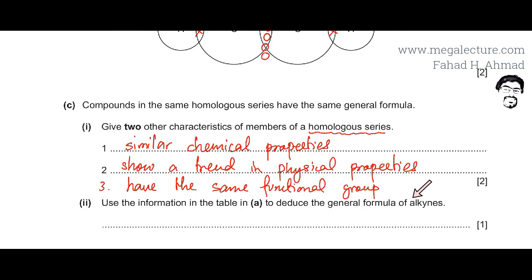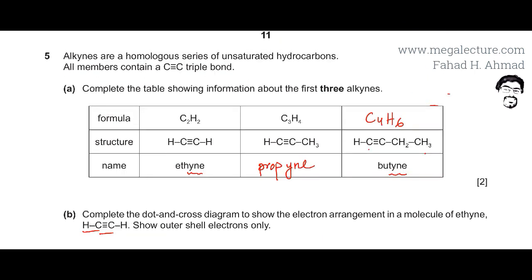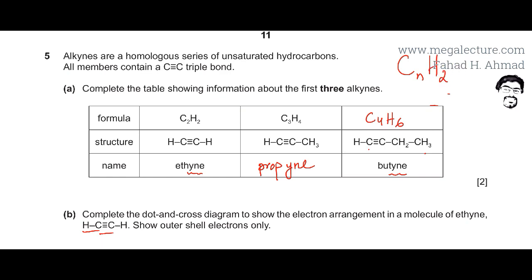The next part asks us to use the information in the table to deduce the general formula of alkynes. When forming a general formula, the number of carbon atoms is denoted by n. If n is 2, the formula should be C2H2; if n is 3, the hydrogen count should come out to 4; and if n is 4, it should come out to 6. Let me figure out the general formula by trial and error.